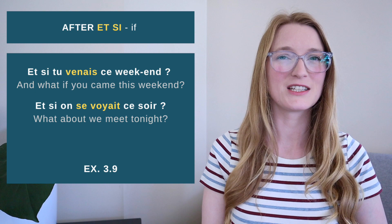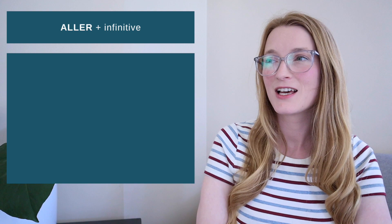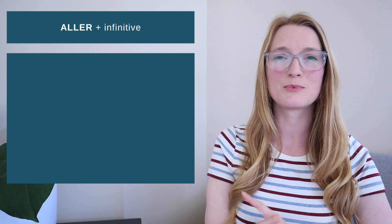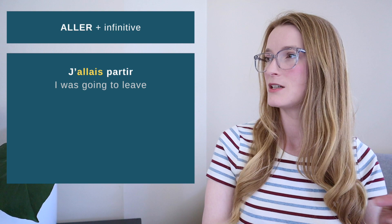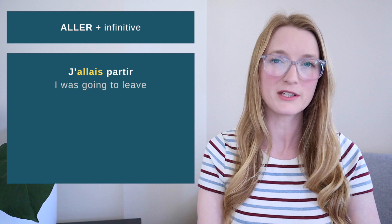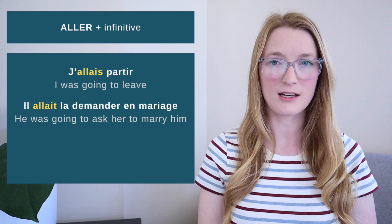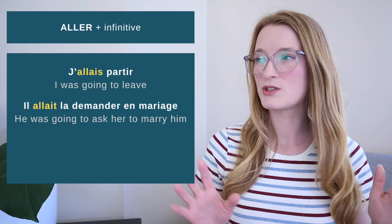Now for a few important points at the end of the lesson. When we have 'aller' plus the infinitive, conjugating the verb 'aller' in the imparfait gives us structures like: 'J'allais partir' — I was going to leave. Or: 'Il allait la demander en mariage' — he was going to ask her to marry him. This shows a different way to build a sentence with the imparfait.